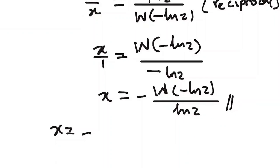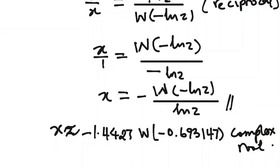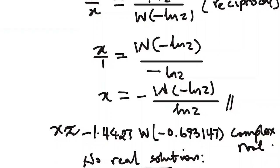In approximate form, x is approximately minus 1.4427 divided by minus 0.9314. This is the approximation, which tells us this is the complex root — so there is no real solution. Thank you so much for watching. If you enjoyed the class, kindly share it with your friends so they can learn from it. Bye bye!